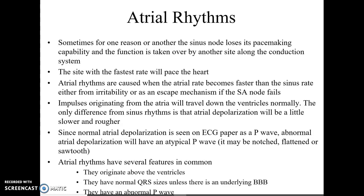Impulses that originate from the atria are going to travel down the ventricles normally. The only difference from sinus rhythms is that the atrial depolarization is going to be a little slower and a little rougher. The atria are still going to depolarize, so we'll still see something for our P wave, but because it's not coming from the sinus node through the normal pathways, instead of getting that nice normal rounded sinus P wave, our P wave is going to be atypical. It may be notched, it can be flattened, it can be sawtooth — but it's going to be different from that normal sinus P wave.